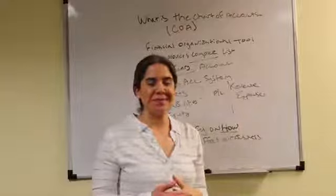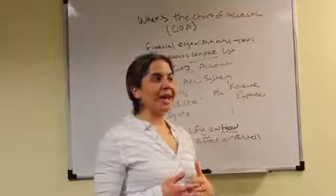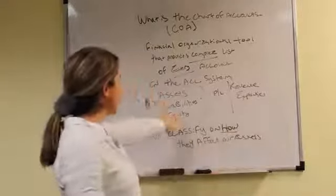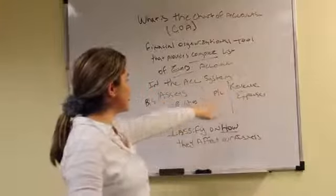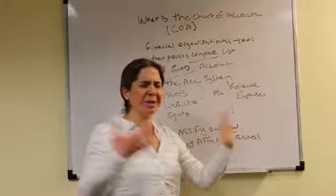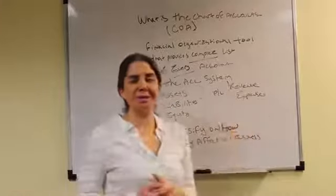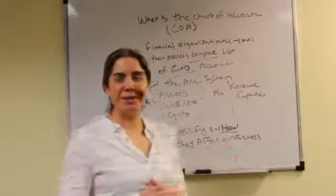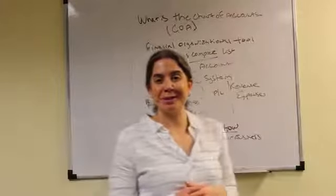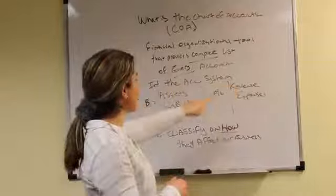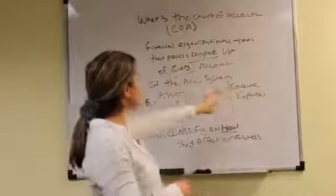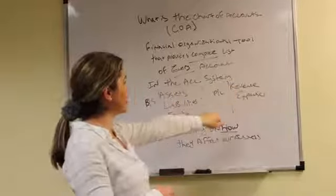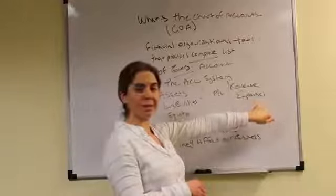So what does that mean? Accounting is made up of assets, liabilities, equities, revenue, and expenses — all these different items. So how do we get organized in the chart of accounts? We have five different categories: assets, liabilities, equity, revenue, and expenses.